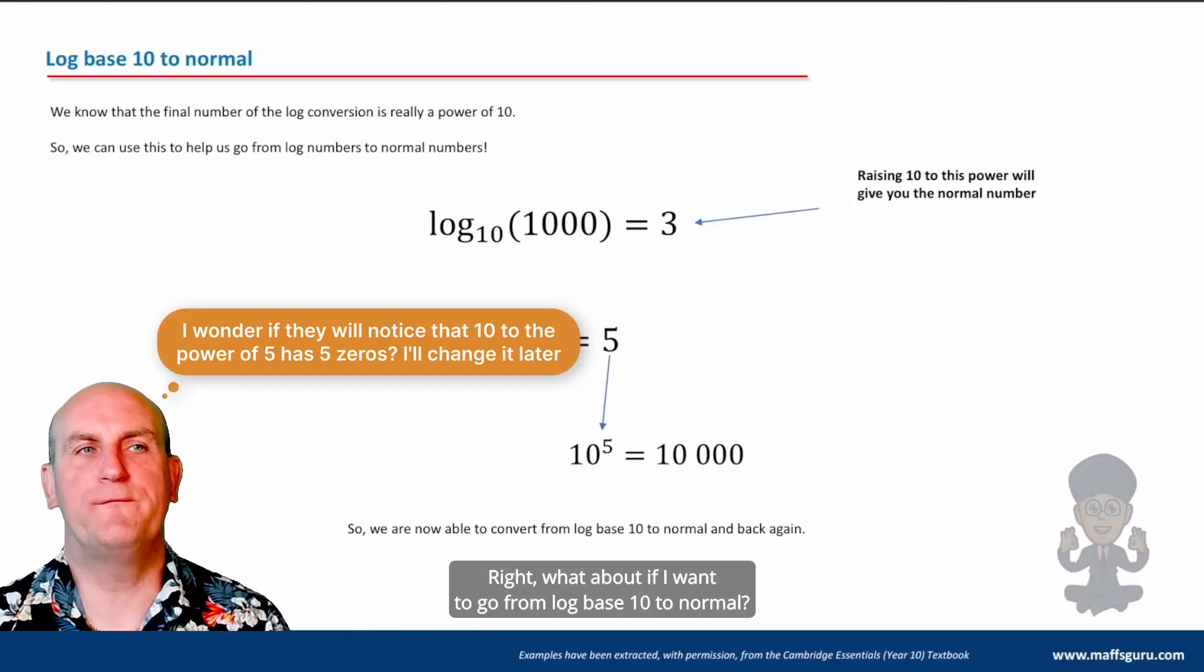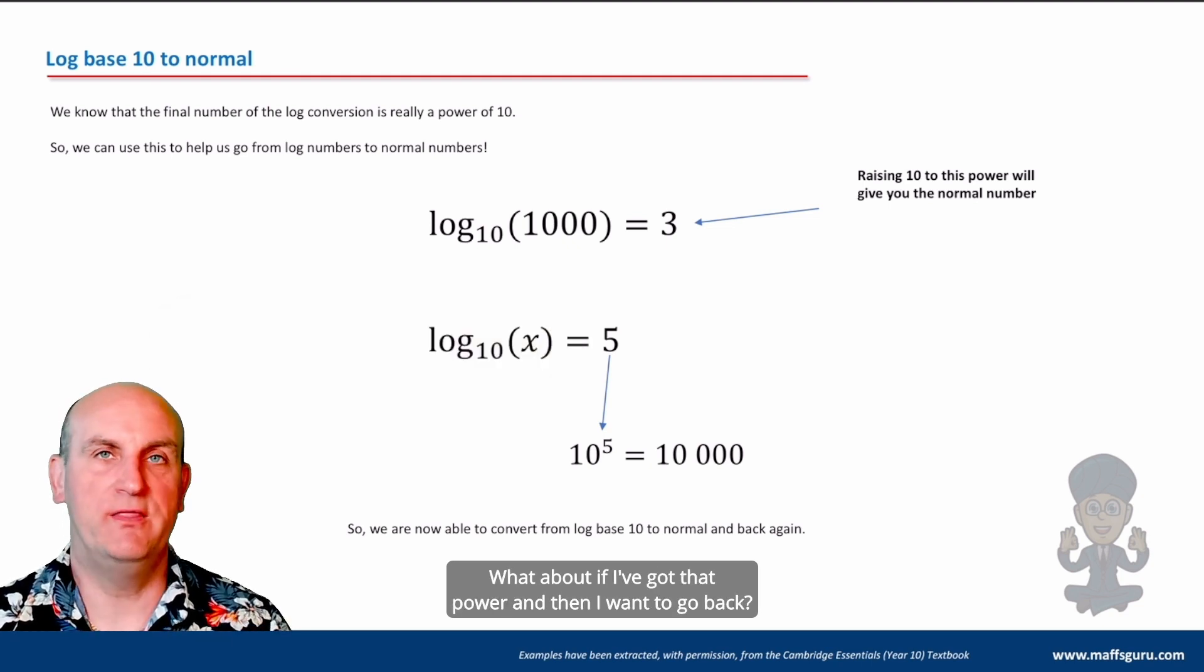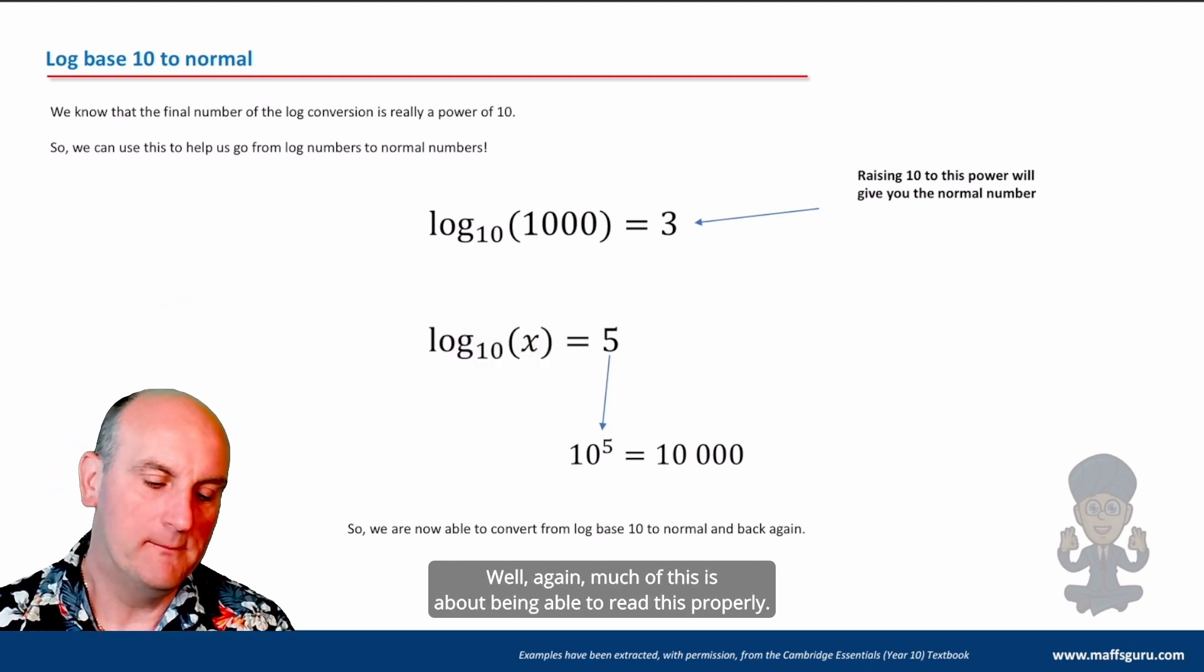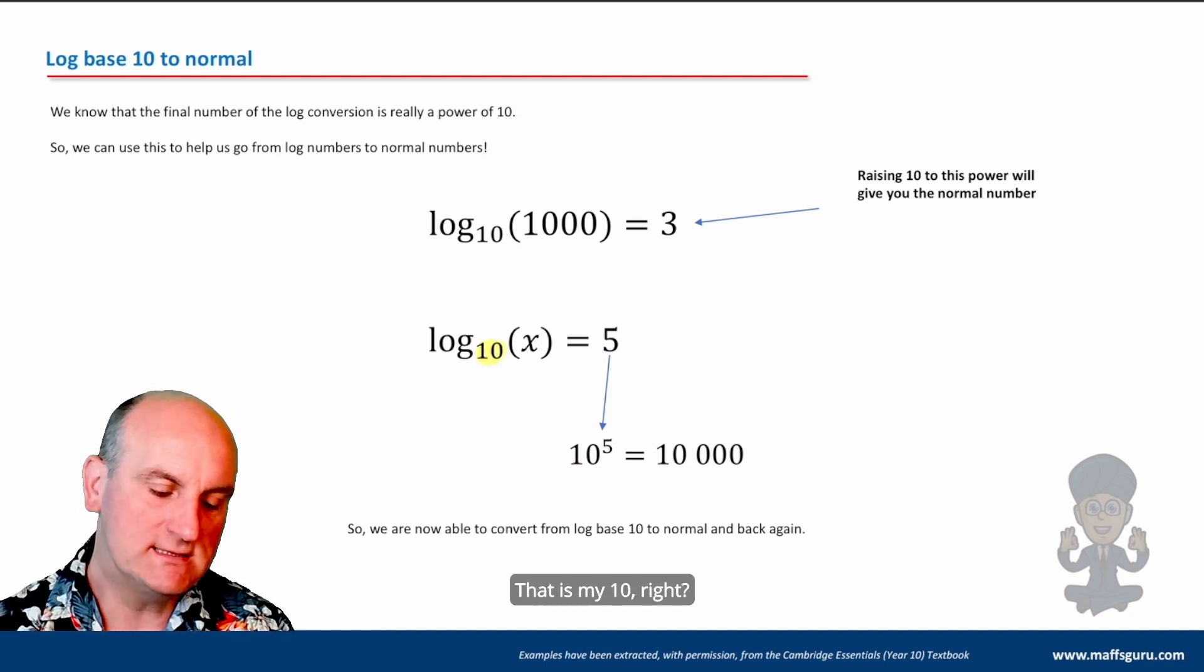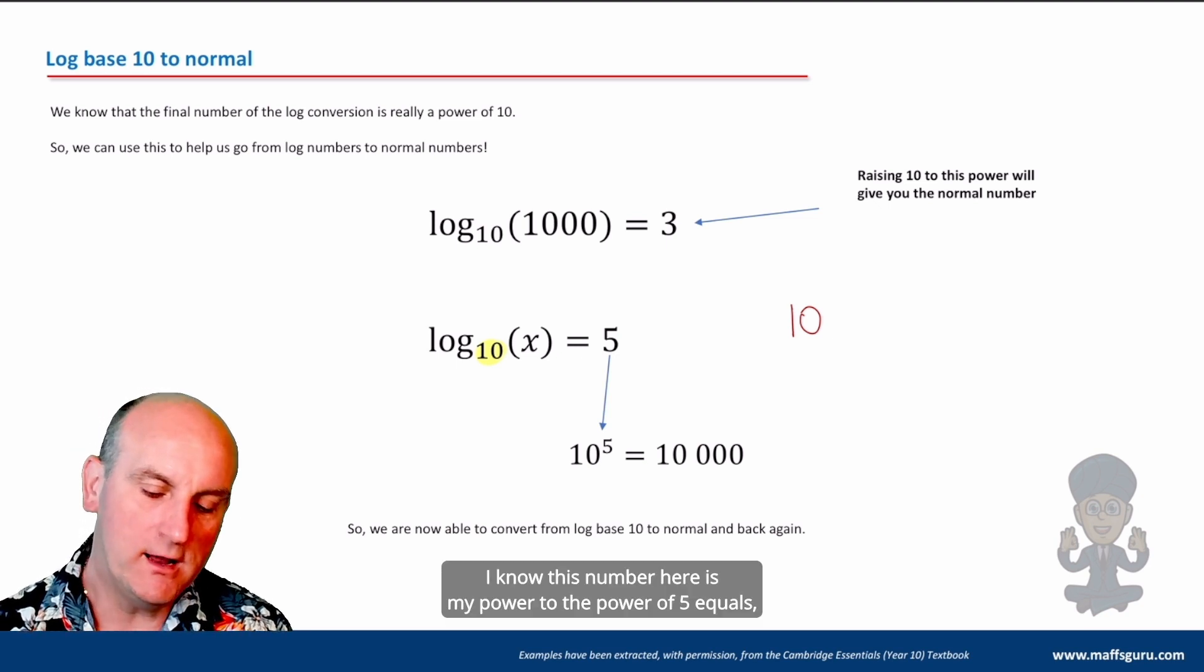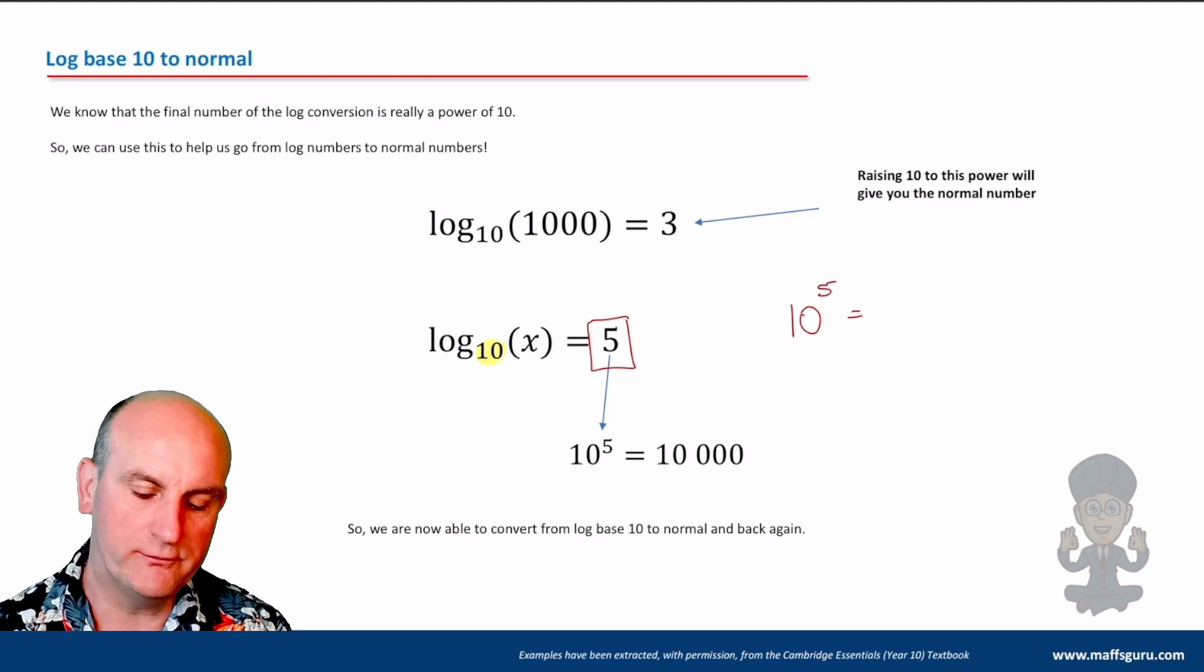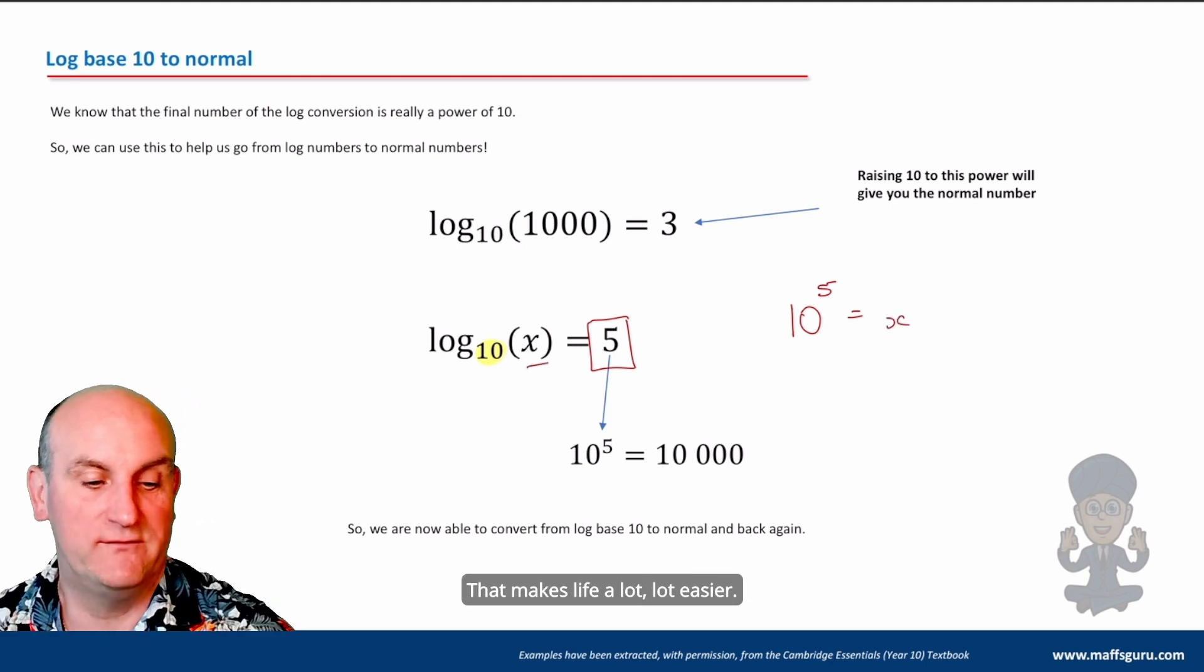What about if I want to go from log base 10 to normal? What about if I've got that power and then I want to go back? Well, again, much of this is about being able to read this properly. That is my 10. So that is my base number. So I can automatically write that as 10. I know this number here is my power to the power of five equals whatever that one is there.